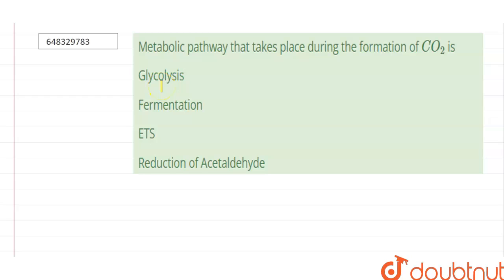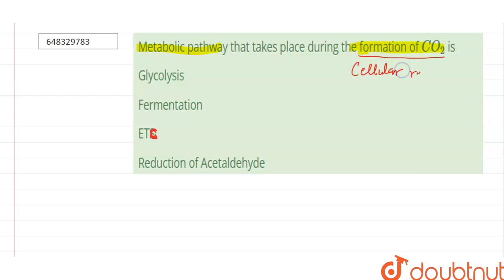The question asks: what is the metabolic pathway that takes place during the formation of carbon dioxide? The options are glycolysis, fermentation, electron transport chain, and reduction of acetaldehyde. The formation of carbon dioxide takes place during cellular respiration in animals, so we will check each option.